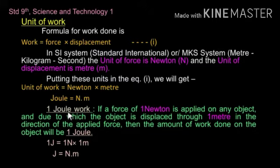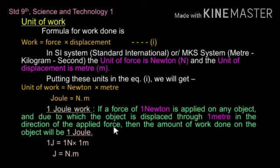How much is 1 Joule of work? If a force of 1 Newton is applied on any object and due to that applied force the object is displaced through a distance of 1 meter in the direction of the applied force, then the amount of work done on that object will be 1 Joule. So, 1 Joule is equal to 1 Newton into 1 meter — that means Joule equals Newton meter.